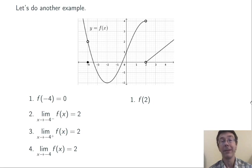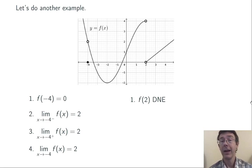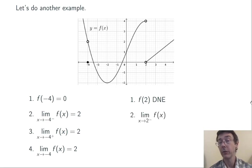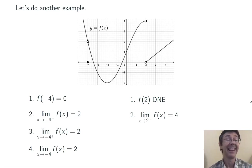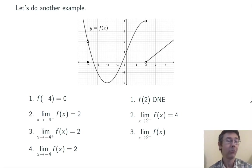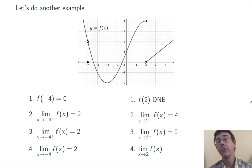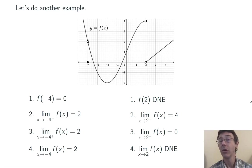Now let's look at limits at x equals 2. f of 2 in this case does not exist — there is no y value corresponding to that x value; it's not in the domain. On the graph, that corresponds to the fact that those circles are open, not filled in. The limit as x goes to 2 from the left: x is less than 2 getting closer to 2, and f of x is getting closer and closer to 4. From the right, as x gets closer and closer to 2, f of x is getting closer and closer to 0. The left-hand limit and the right-hand limit are not the same, so there is no single value this function is approaching, and the overall limit does not exist.